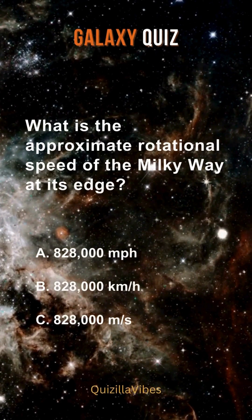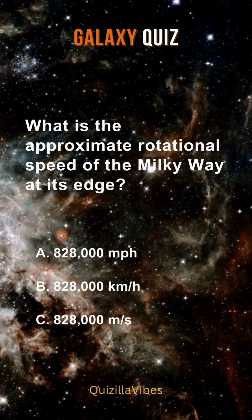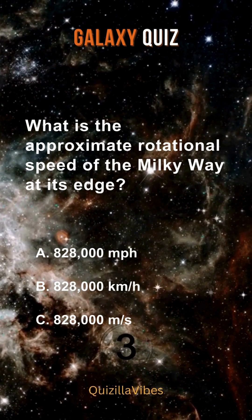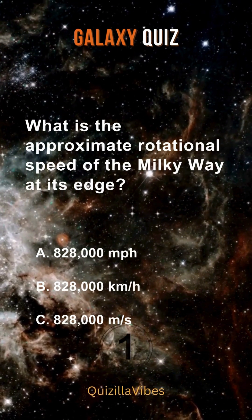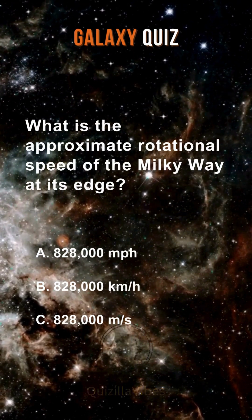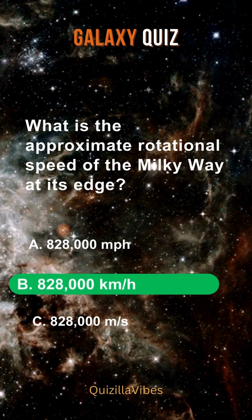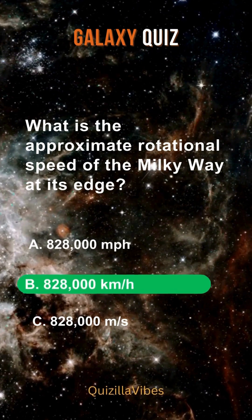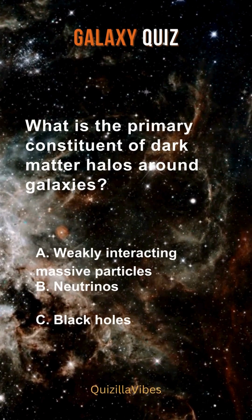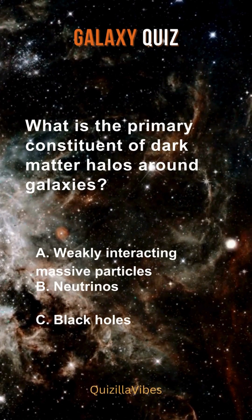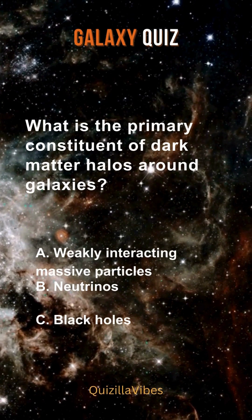What is the approximate rotational speed of the Milky Way at its edge? 828,000 km per hour.